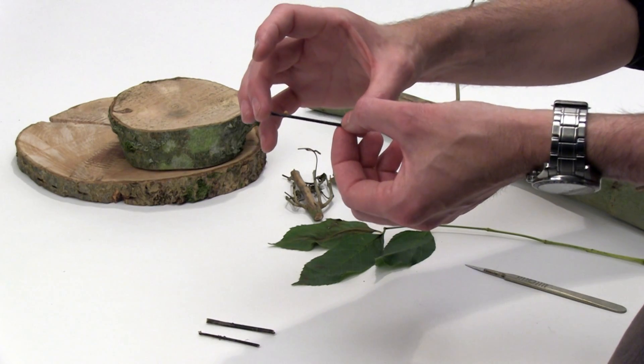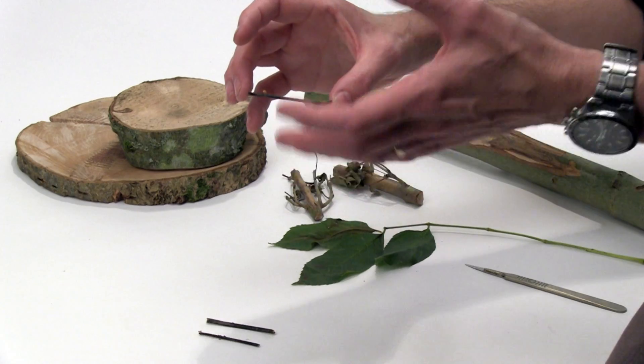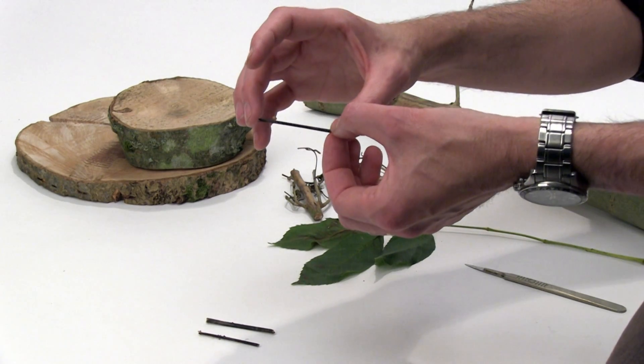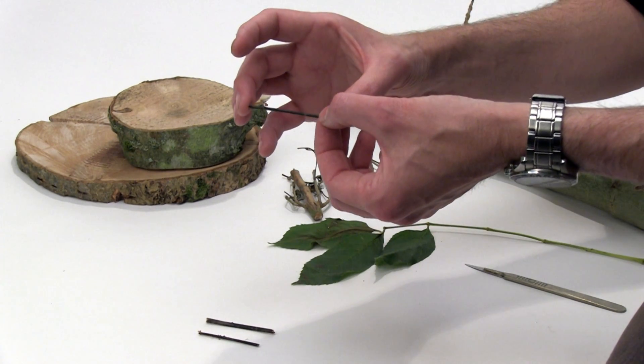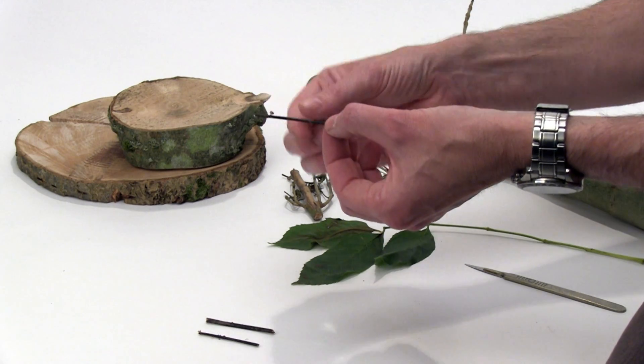You generally find this happens between about June and probably till the first hard frost, so sometime in October when you won't see this particular stage anymore.